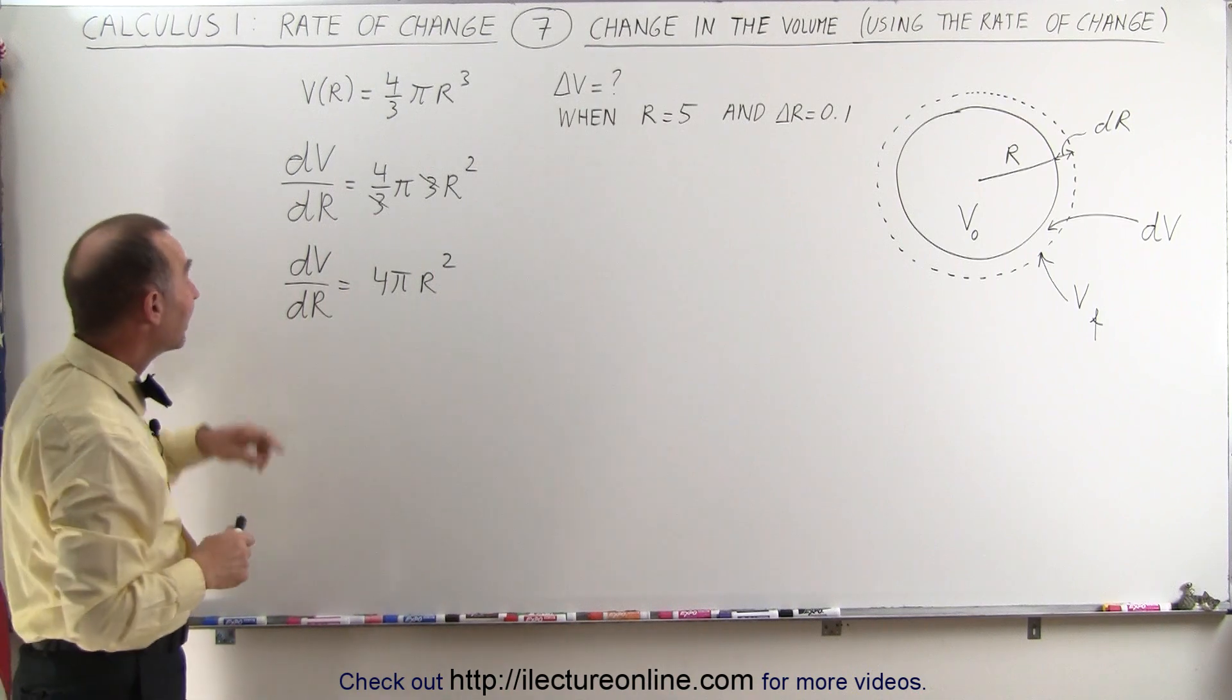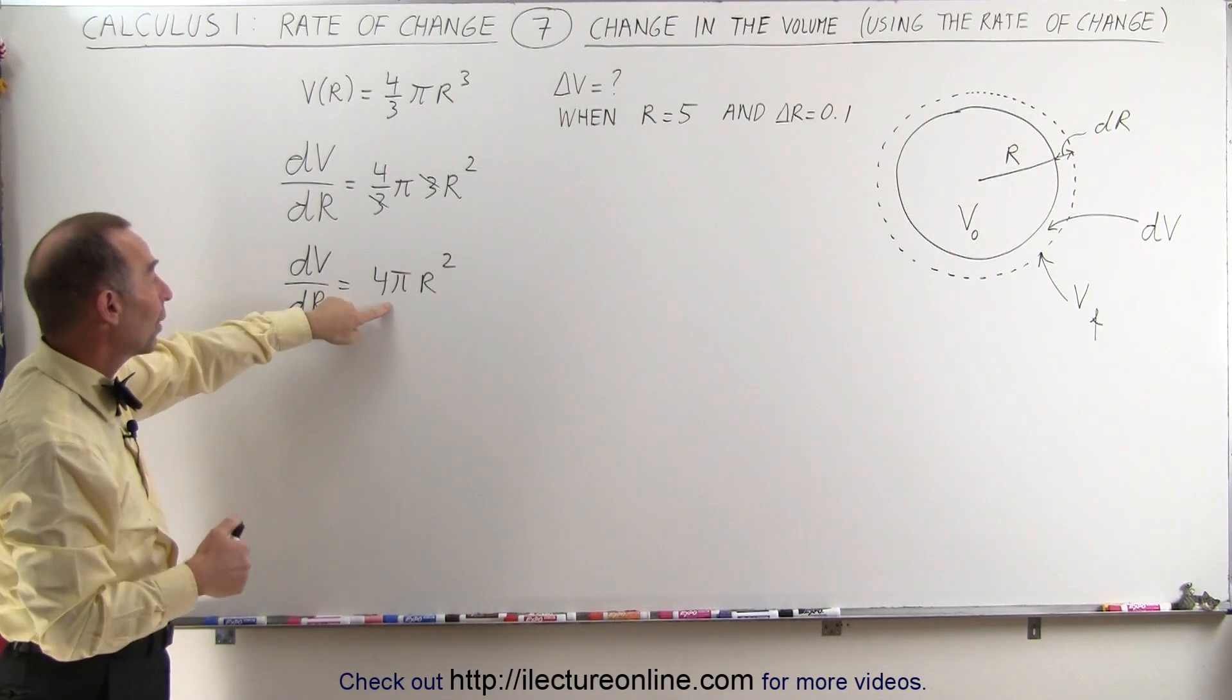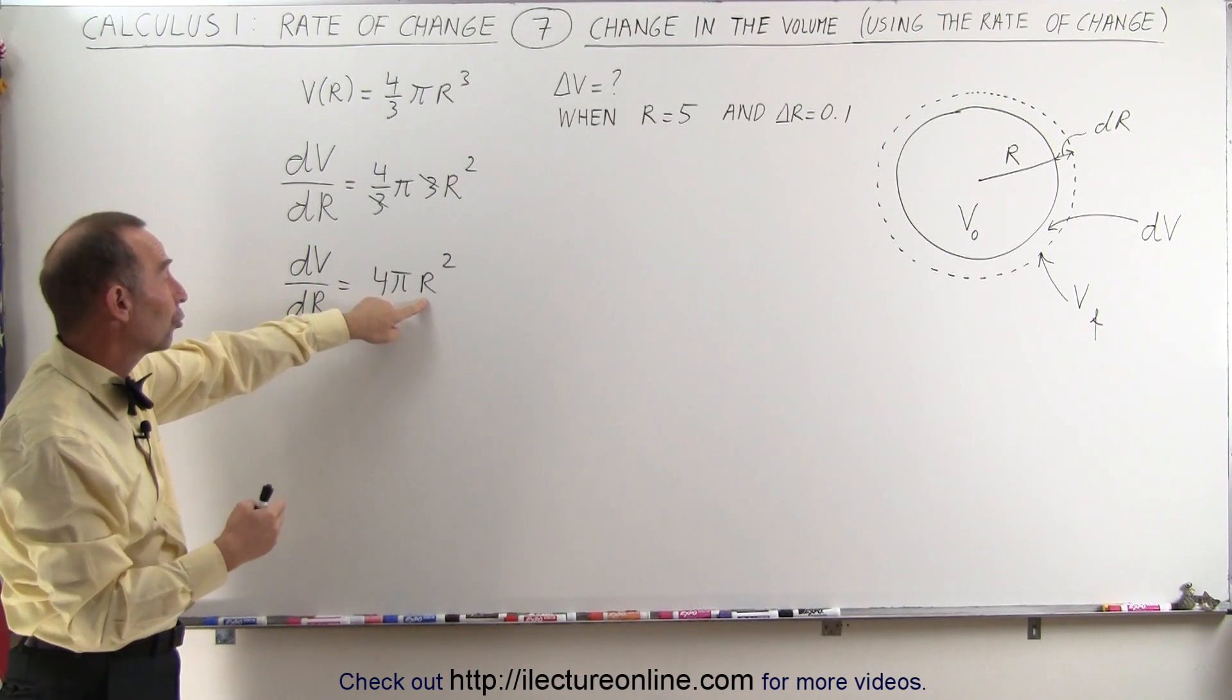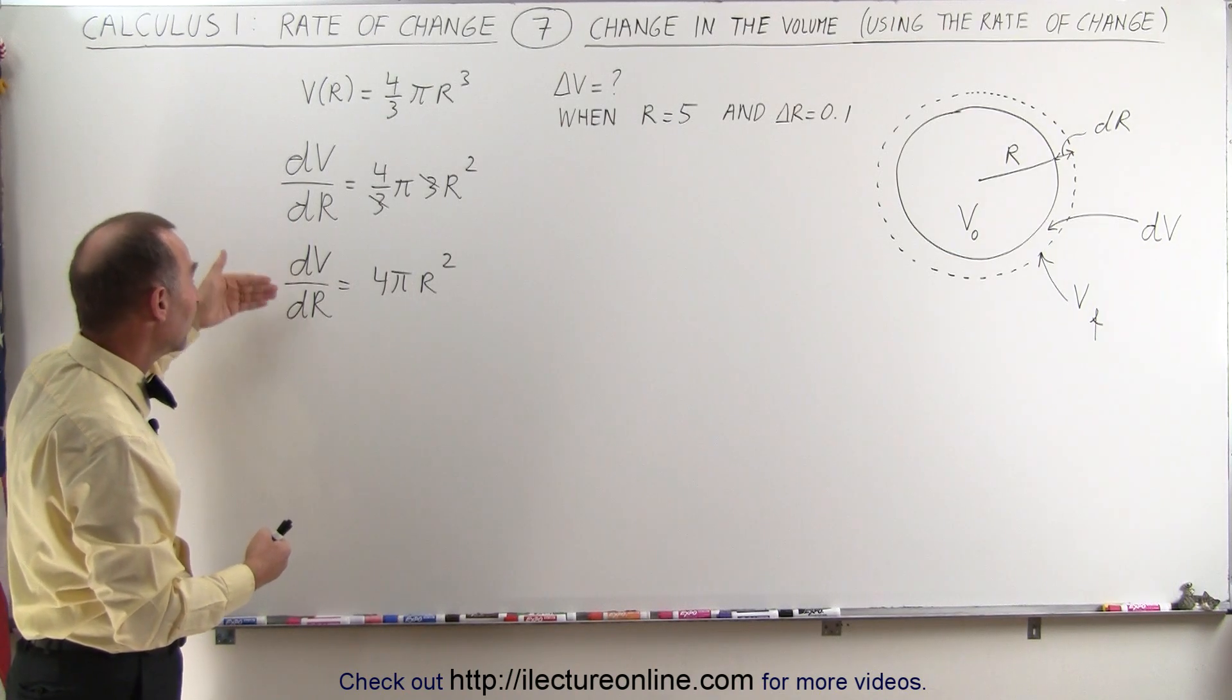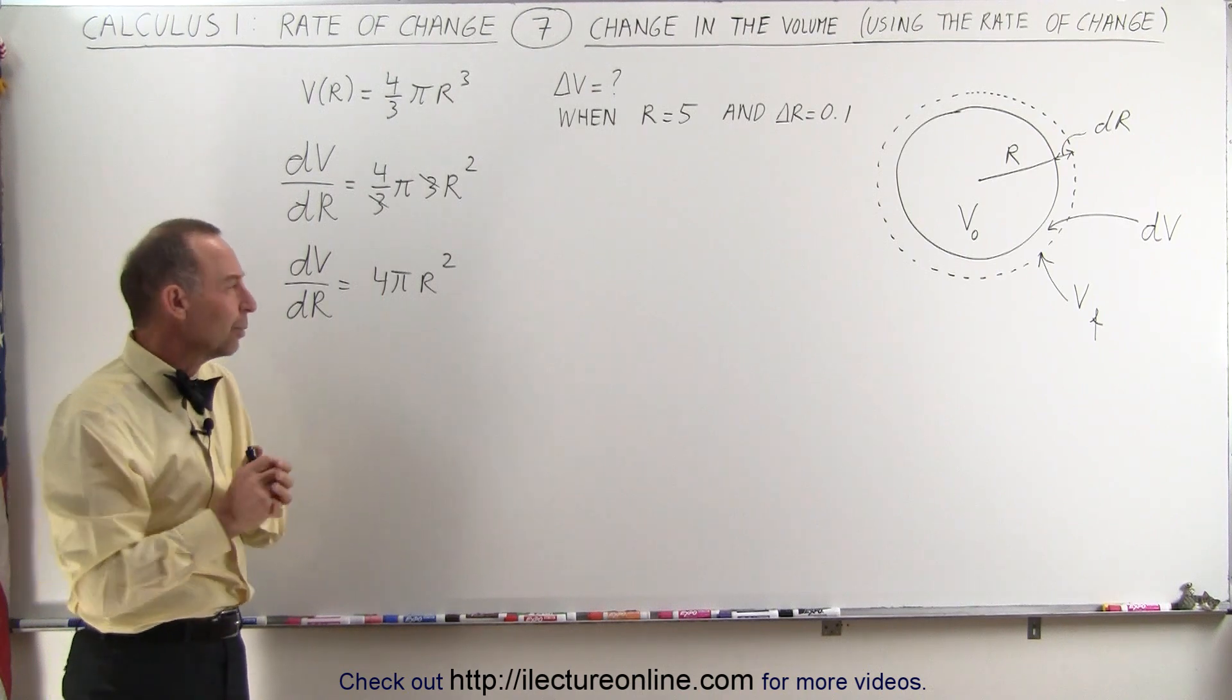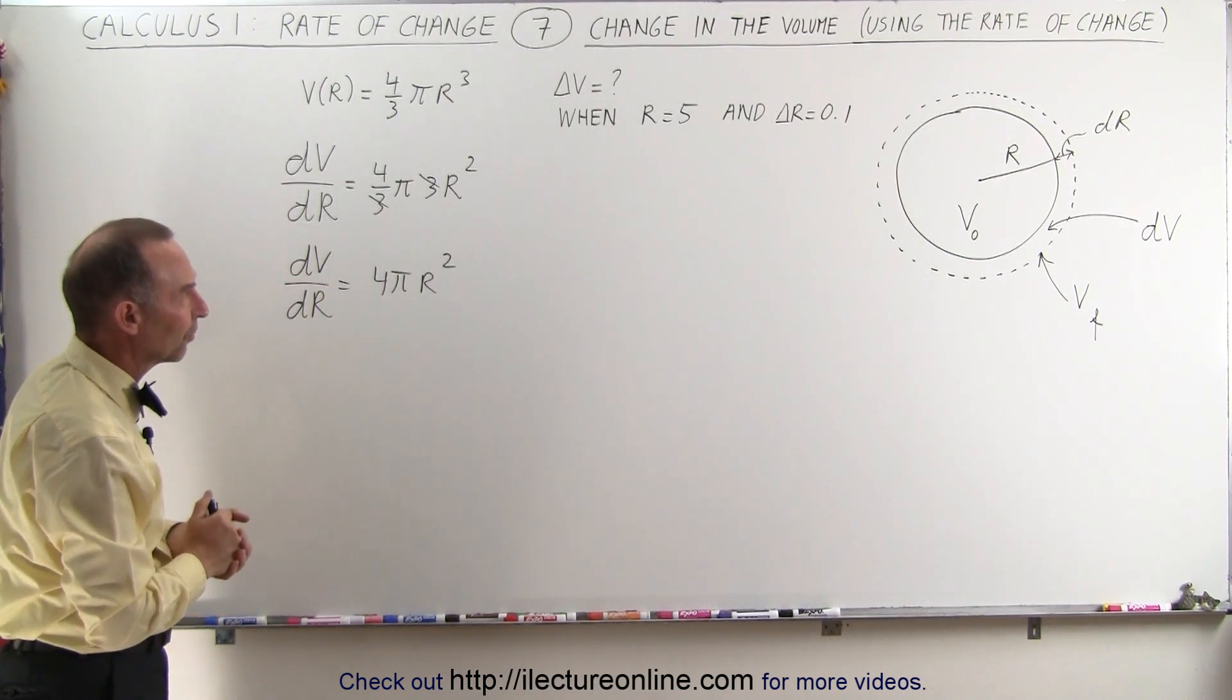Now that means is that the change in the volume with respect to the radius is this equation 4πr squared, and then all we have to do is plug in a certain value for r, and we get the rate of change of the volume with respect to r. Rate of change, typically we do that with respect to time, but in this case it's with respect to the radius.